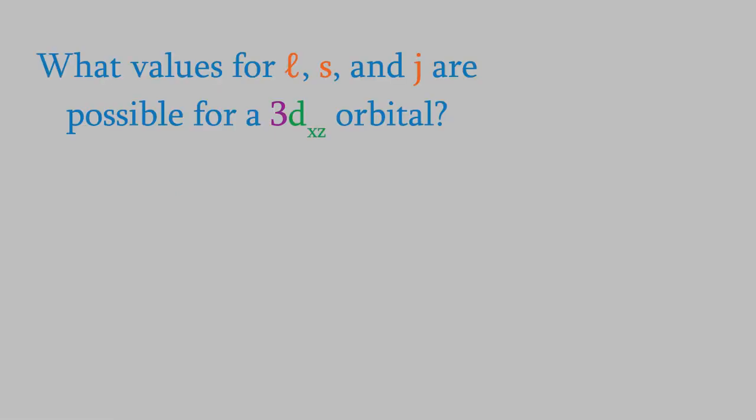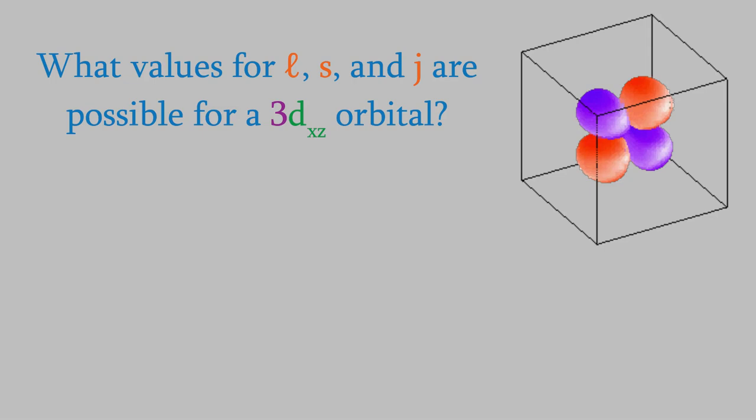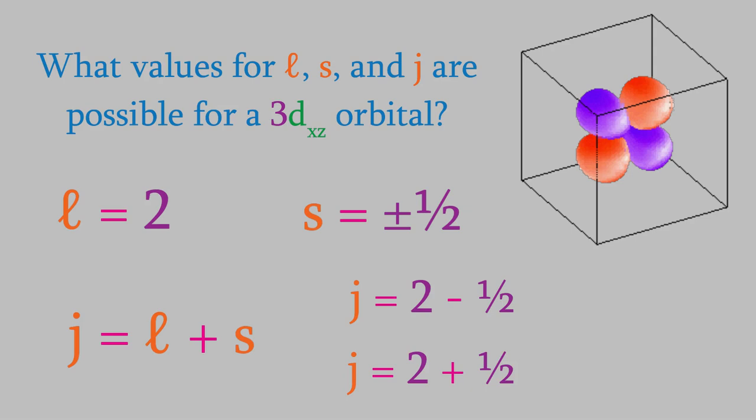For instance, suppose we have an electron in a dxz orbital. What values could we have for l, s, and j? Well, as you might remember from your general chemistry days, the value of l for a d orbital is two. And that's true no matter which d orbital it is. Meanwhile, the value of s can be either negative one-half or positive one-half. That means the total angular momentum, j, could be two minus or plus one-half. So, it's either three-halves or five-halves.